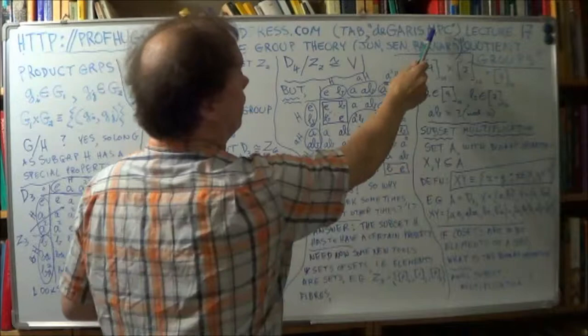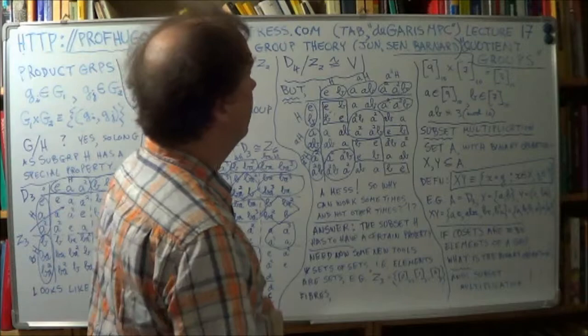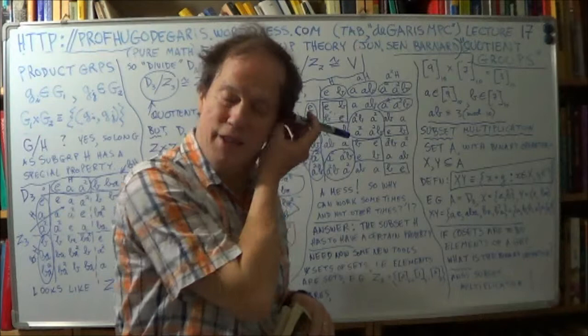.wordpress.com, and then click on the tab, de Garris MPC. M stands for Math, P for Physics, and C for Computing, and my intention is, over the next few decades, if I can live long enough,